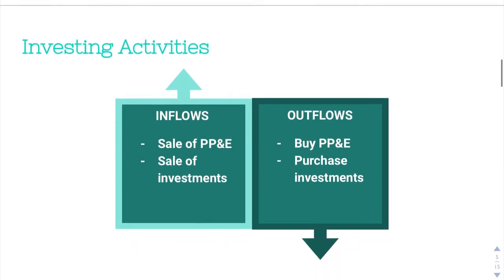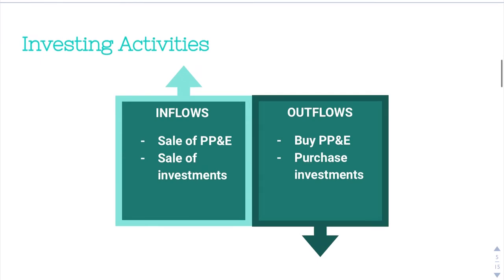For investing activities, inflows would represent things like the sale of property, plant, and equipment, or the sale of investments, because when we're selling it we're getting rid of it but we're receiving cash for it. Outflows would be buying property, plant, and equipment, or purchasing investments, because we are paying for them — that represents a cash outflow.